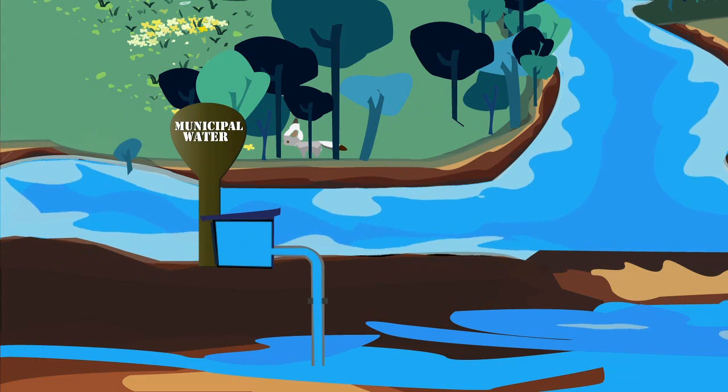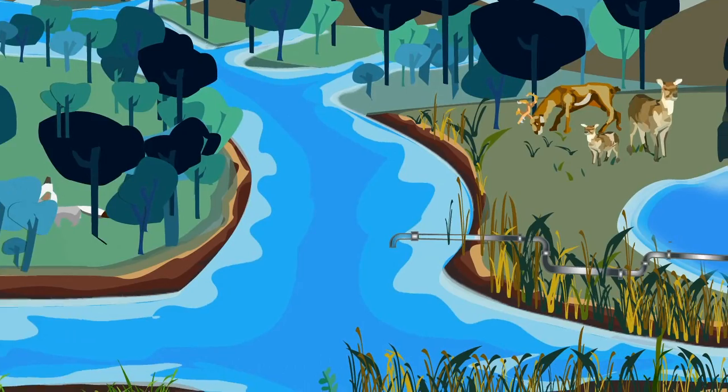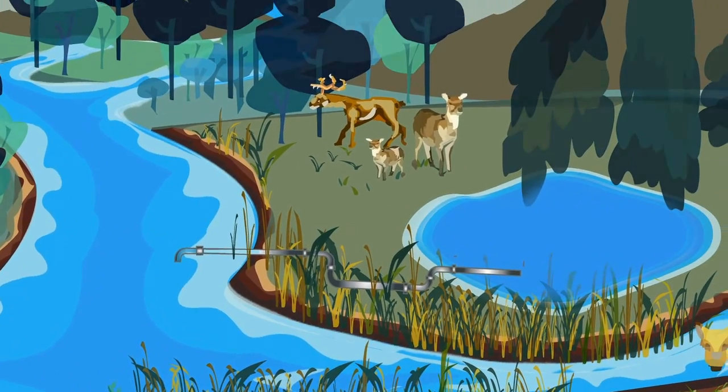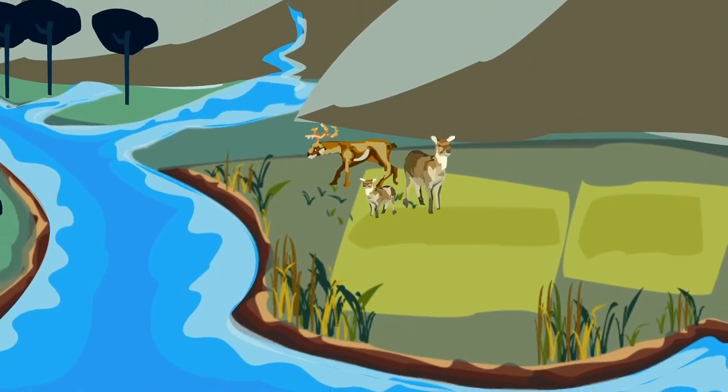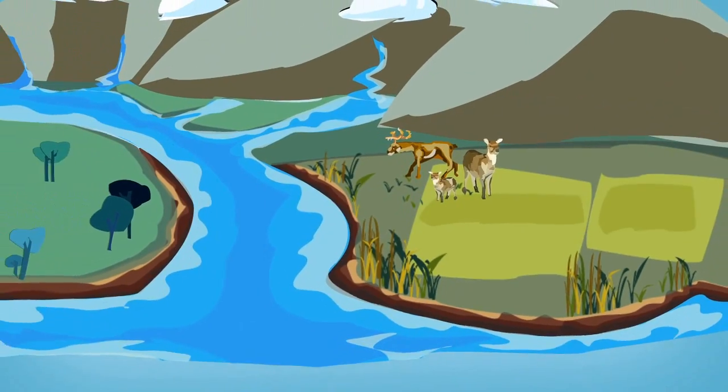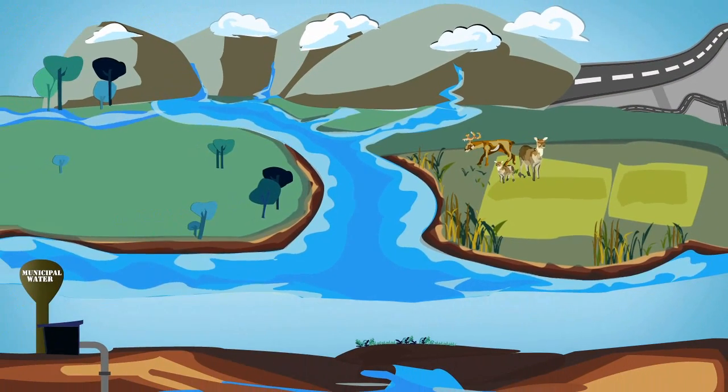Our source of drinking water, whether it comes from the surface or underground, is affected by what happens on the land around it. And although we don't mean to, our daily activities often end up polluting our most essential resource.